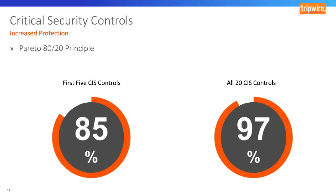Organizations following basic cyber hygiene can prevent upwards of 96–97% of attacks — and this is where that stat comes from. The Pareto principle states that 80% of effects come from 20% of causes. Implementing the first five CIS controls stops 85% of attacks. If you implement all 20, you stop 97% of attacks. This is why CIS provides the first five controls freely on their website. The effort-to-protection ratio is tremendous for these basic controls, while the additional 15 produce another 12% or so of protection.